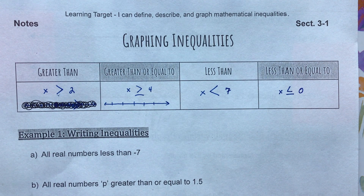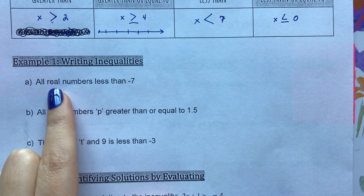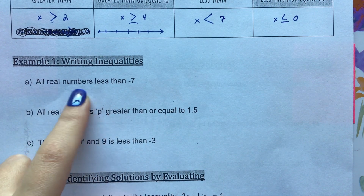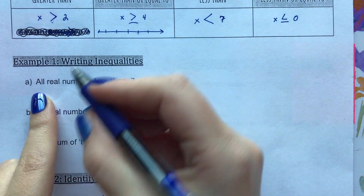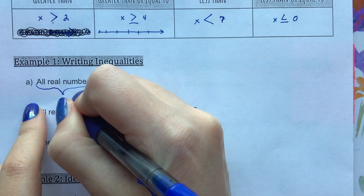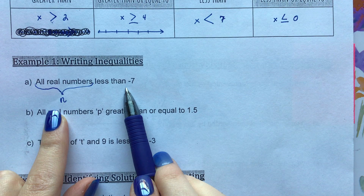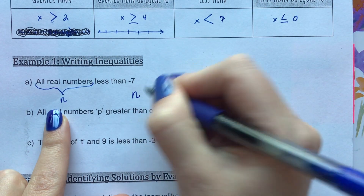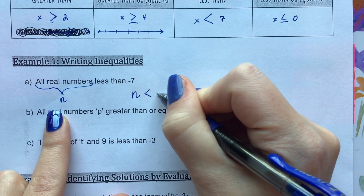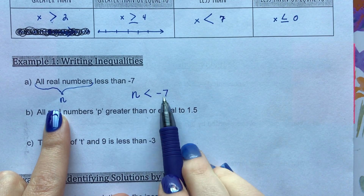We're going to practice writing some of these out now based on word problems. In this first one, it says all real numbers less than negative seven. The 'all real numbers' needs to be represented by a variable, so I'll choose n for numbers, and I want them to be less than negative seven. So: n is less than negative seven.